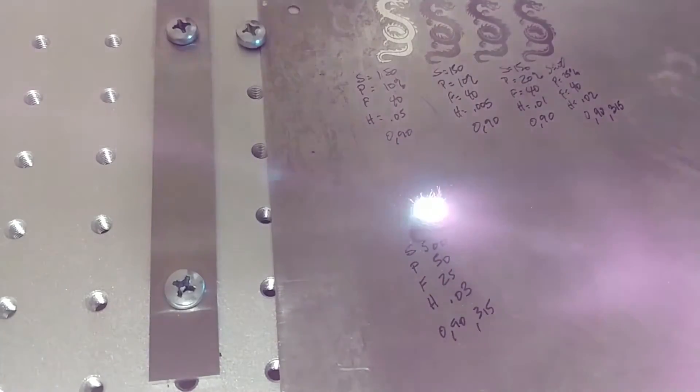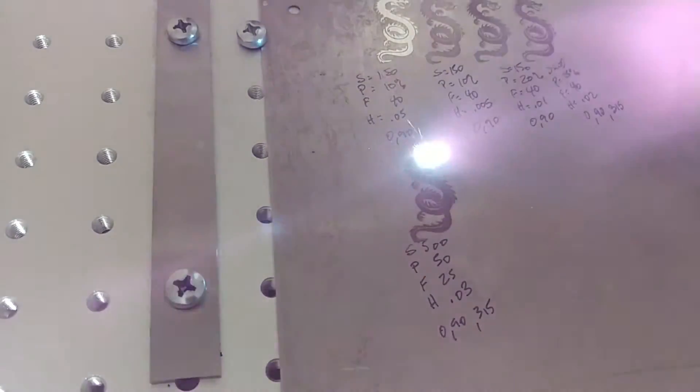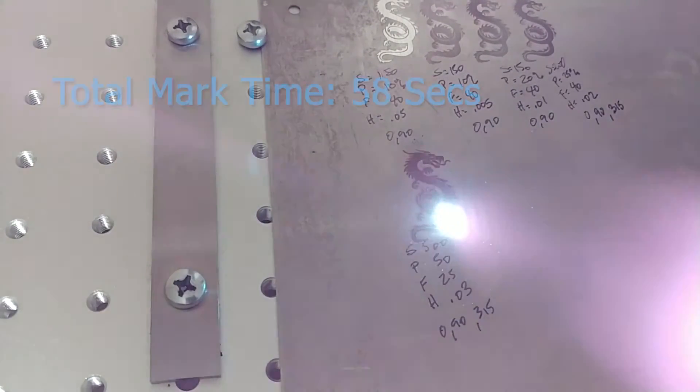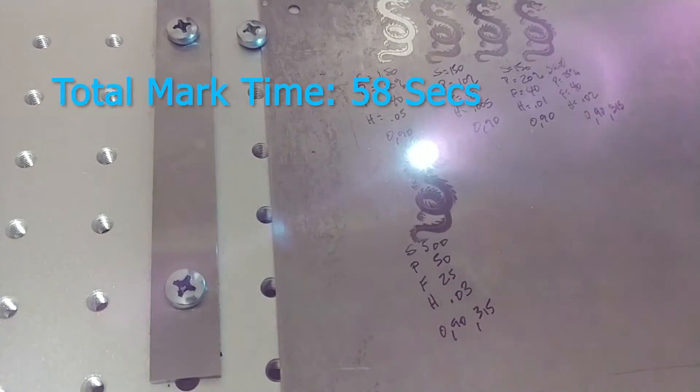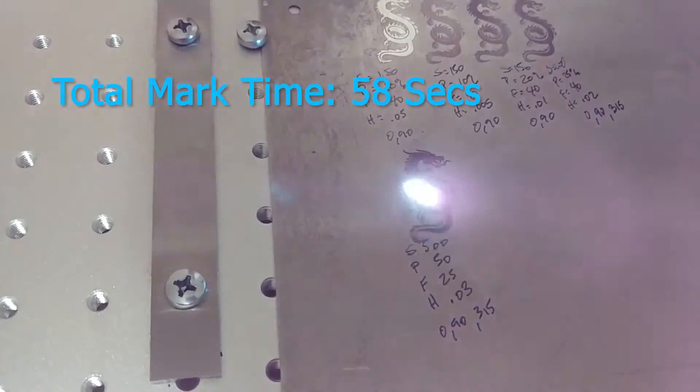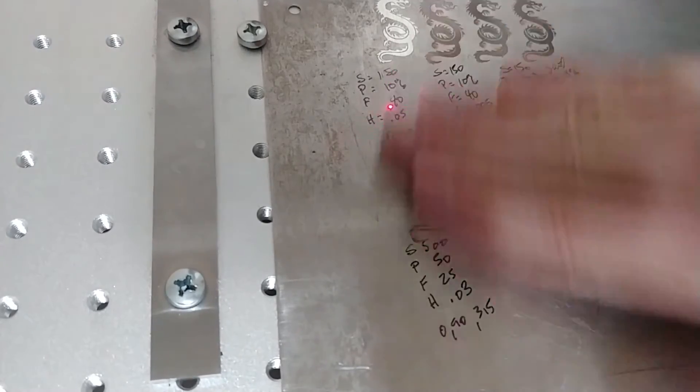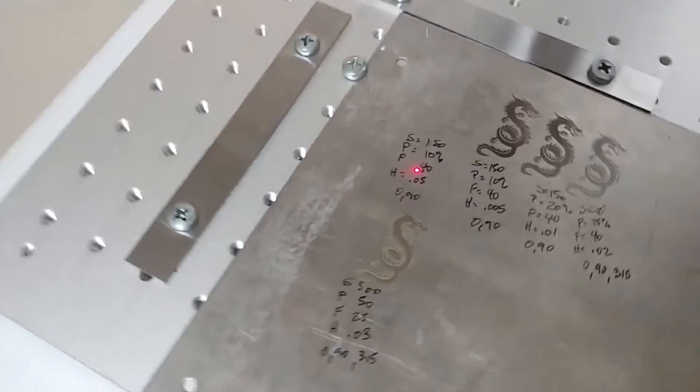This one we're going to do at a much higher speed, 500 millimeters per second. We're going to up the power all the way to 50, lower the frequency down to 25, so I believe that should be more destructive and vaporize more material. Hatch is going to be all the way up to 0.03 millimeters, and we're still going to do the three different hatches. As compared to the second mark we made, that first black mark up top, it's not quite as shiny, so it's not quite as pretty, but it is happening pretty darn fast. Now there is a little bit of a brownish hue to it, and that seems to be what happens with stainless when you use too much power and go too fast.